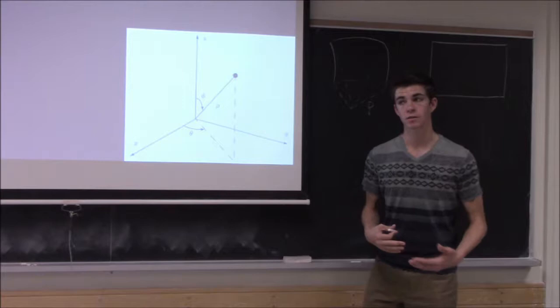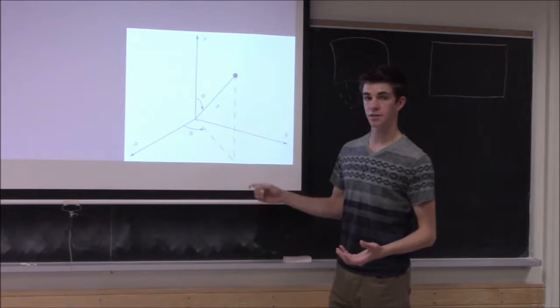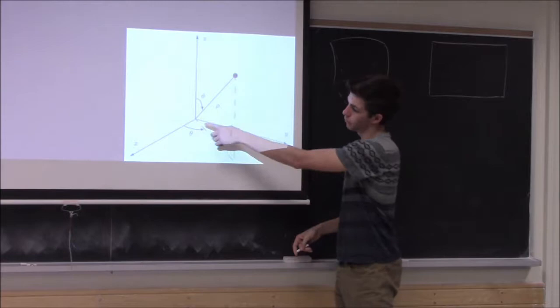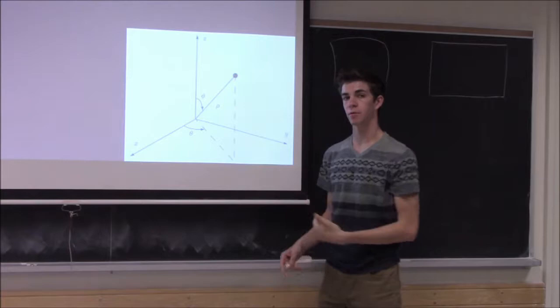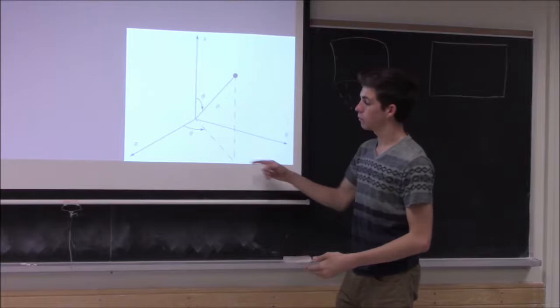So to begin, we have the spherical coordinate system. We have our standard Cartesian axes x, y, and z. Rho is the radius of the sphere, and phi is the reference angle from the positive z-axis. Phi ranges from 0 to pi, and then we have theta in the x-y plane ranging from 0 all the way to 2 pi.